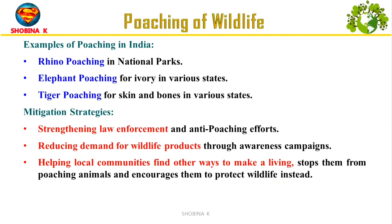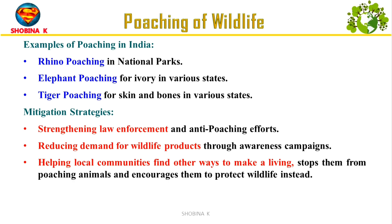Examples of poaching in India include rhino poaching in national parks, elephant poaching for ivory in various states, and tiger poaching for skin and bones. Mitigation strategies include strengthening law enforcement and anti-poaching efforts, reducing demand for wildlife products through awareness campaigns and education, and providing livelihood support to local communities so they do not resort to poaching.